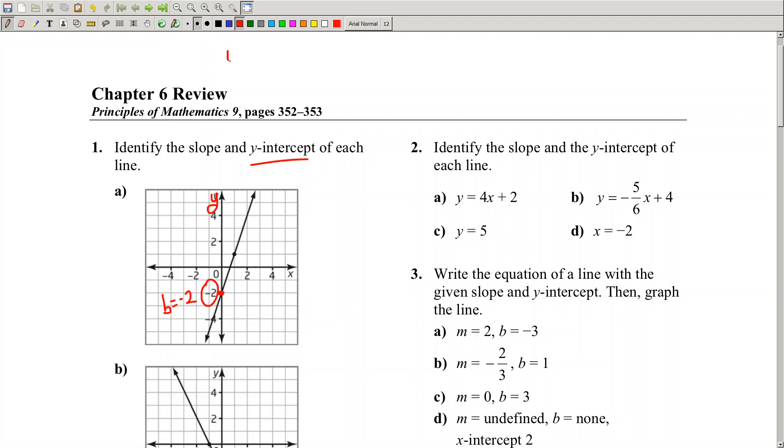Remember the equation is in y = mx + b form. M is the slope. We just got the y-intercept of negative 2, we just need the slope.